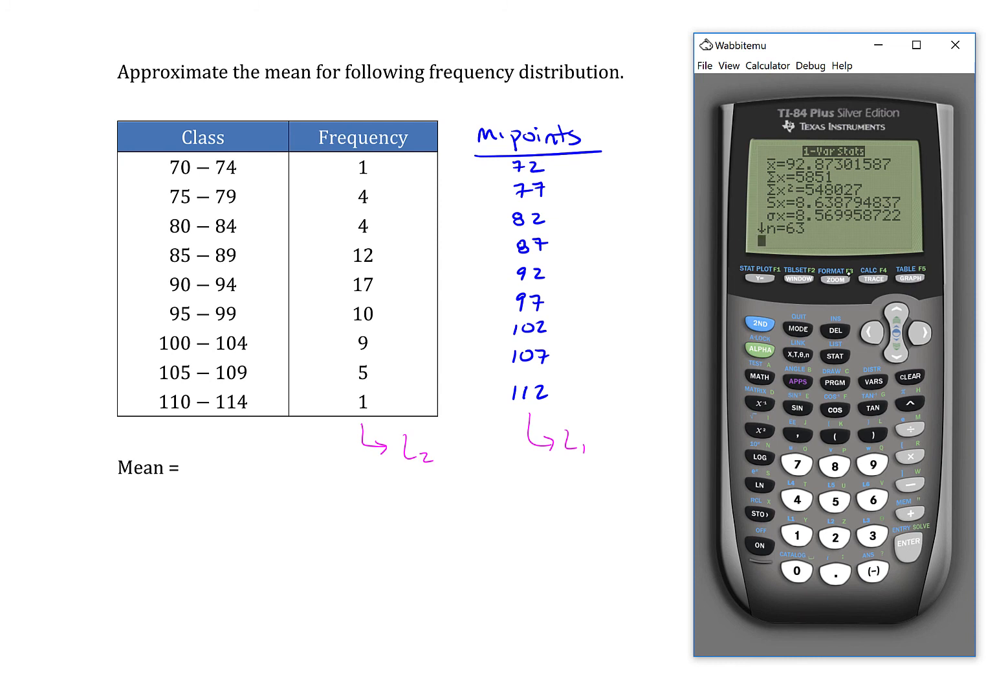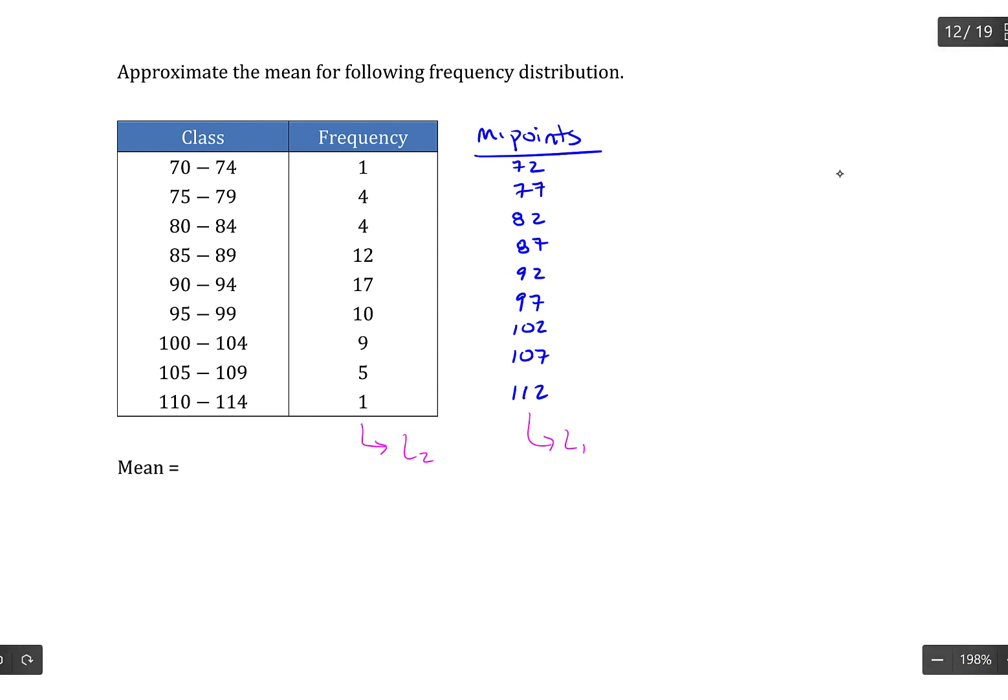So either way you get to it, just press enter to calculate and you'll find the weighted mean here is 92.87. I'm just going to take it to two decimal places, but follow any rounding rules provided in the problem.